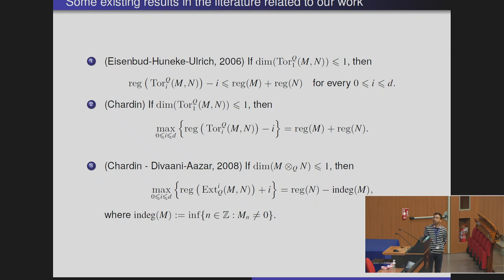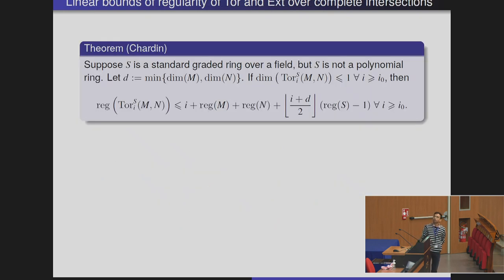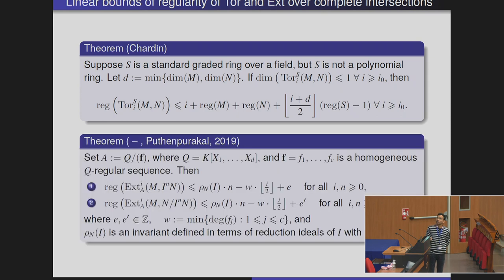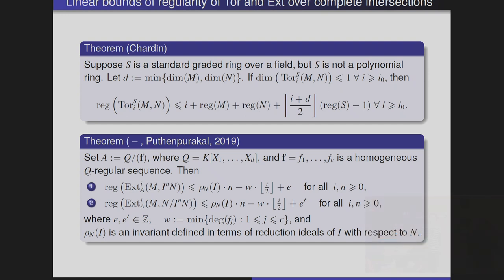Naturally one can ask what happens when we consider an arbitrary standard graded ring. In that case also, under the condition that the dimension of the i-th Tor is at most one after a certain stage, we have the bound that the regularity of the i-th Tor is bounded above by i plus regularity of M plus regularity of N, where the floor function gives the integral part of this ratio (i plus d) divided by 2. The following result controls regularity of Ext modules over graded complete intersection rings with respect to both cohomological degree and powers of ideals.